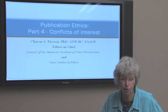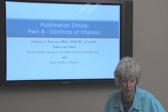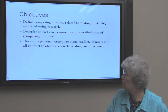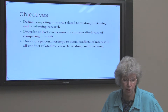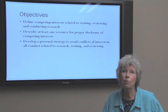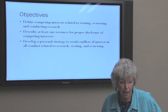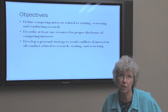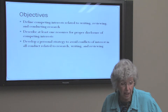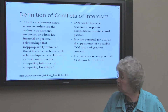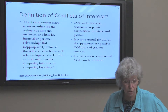This is the fourth part of a five-part series on Publication Ethics. Our objectives for this discussion are to talk about conflict of interest or competing interests relating to writing, reviewing, and conducting research. You should be able to describe at least one resource for proper disclosure of competing interests, which I'll tell you about, and also to develop a personal strategy to avoid conflicts of interest.